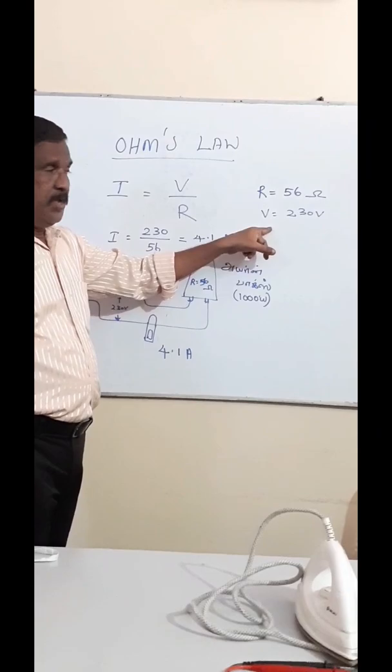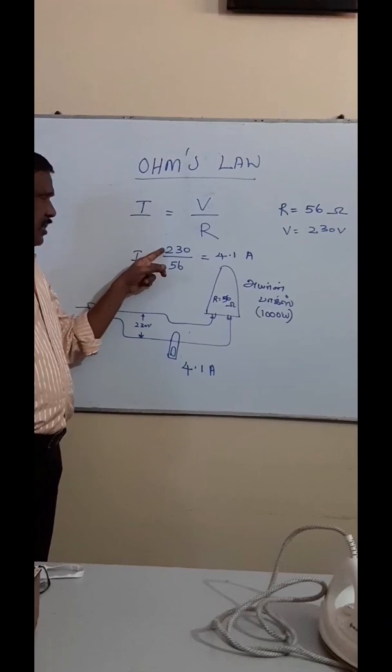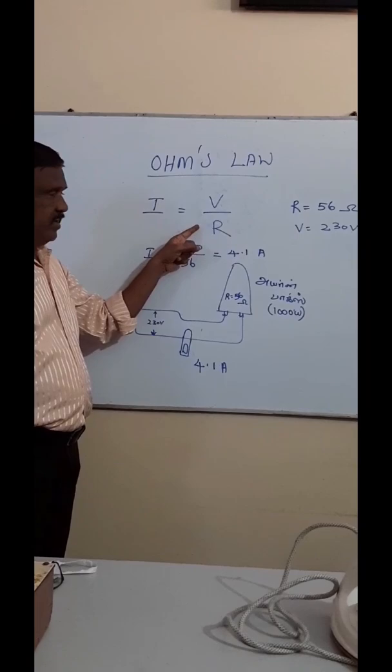So, we have these two values. 230 volts divided by 56. Volt is 230, resistance value is 56. Dividing these two values gives us 4.1 amperes.